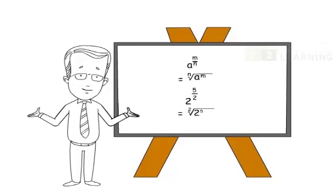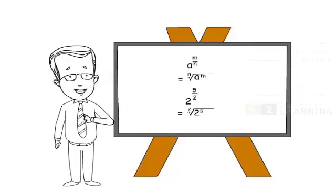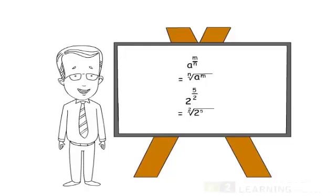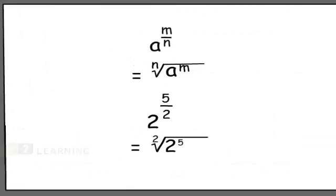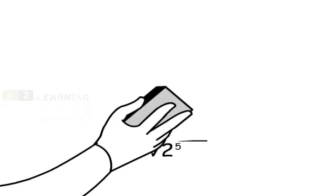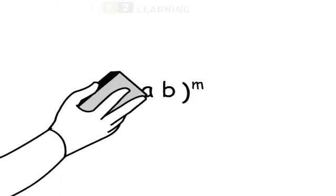So far, we have worked with indices having the same base and we have made some steady progress with rules governing them. Now, let us see a couple of cases where the bases are different. The expression AB whole raised to m can be simplified as A raised to m into B raised to m.